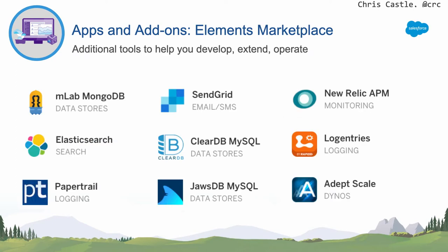Heroku has a marketplace called the Elements Marketplace of over 150 add-on services — data stores, logging providers, monitoring providers. These are our most popular ones. It's less code you have to write as a developer — just glue code that integrates a service like New Relic APM monitoring, or SendGrid for sending password reset emails.